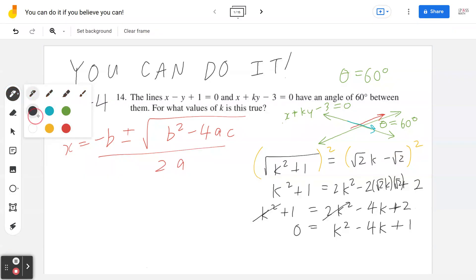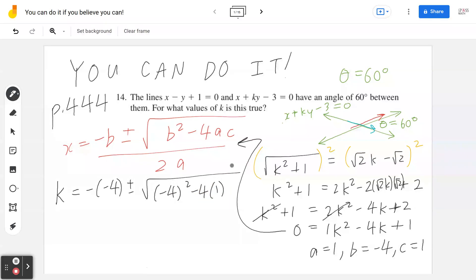If I go back, this means k equals, a is 1, b is negative 4, c is 1. So negative b is negative negative 4 plus or minus square root of negative 4 squared minus 4 times 1 times 1 divided by 2 times 1. Here comes the final answer: 4 plus or minus square root, this is going to be 16 minus 4, that's 12 all over 2.